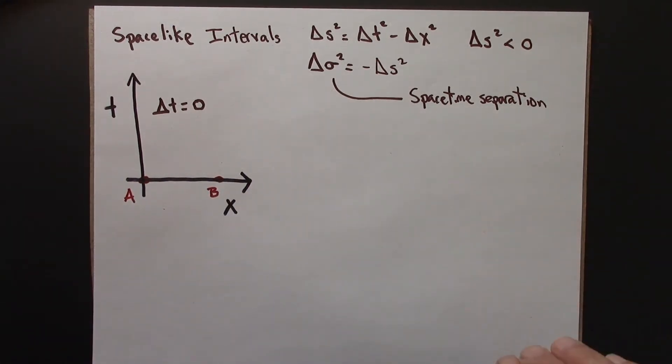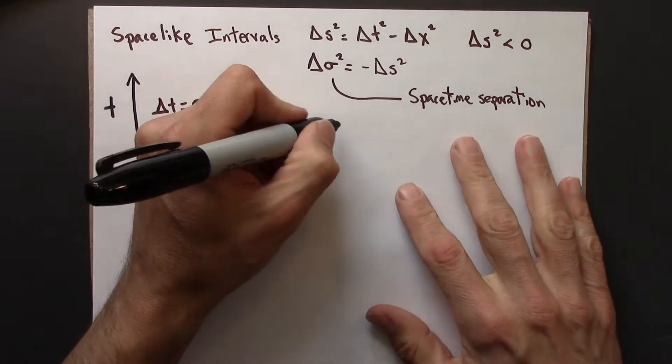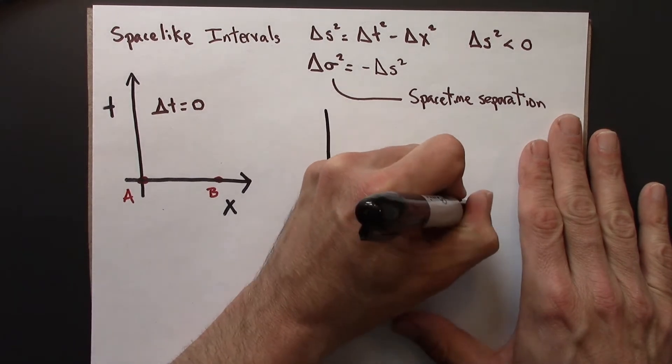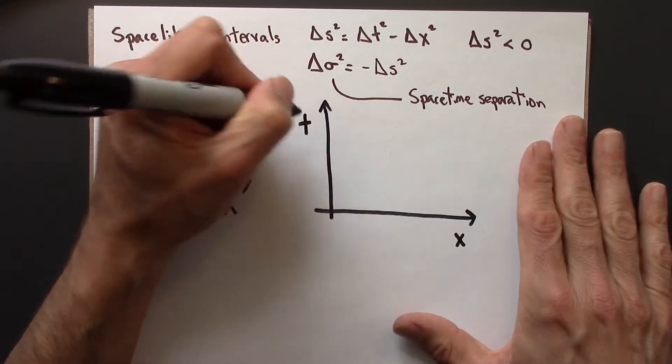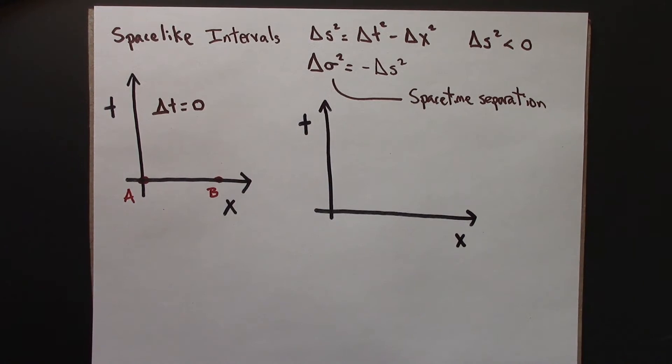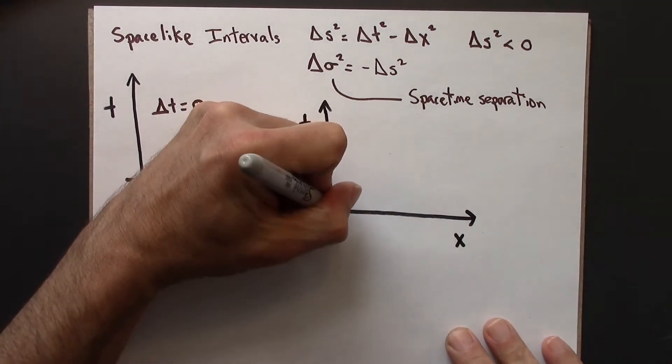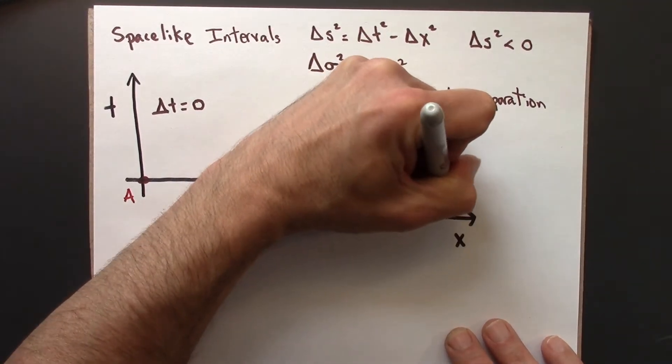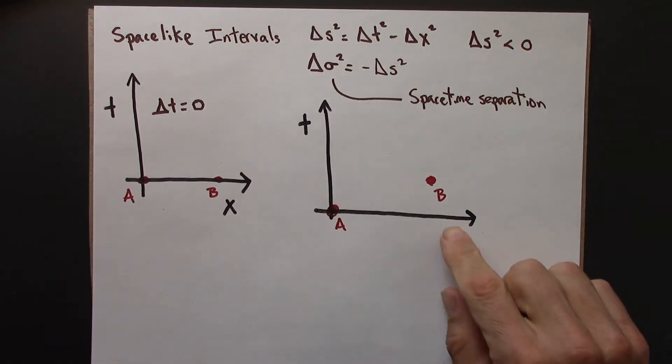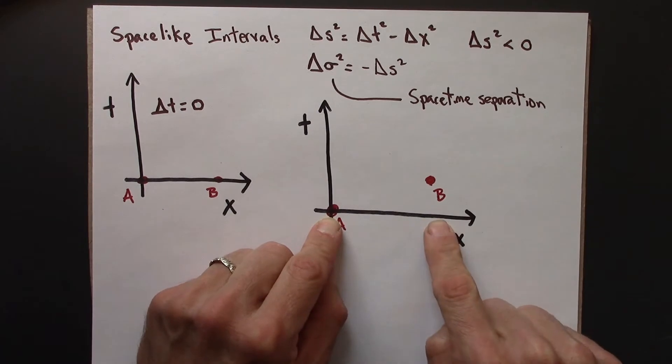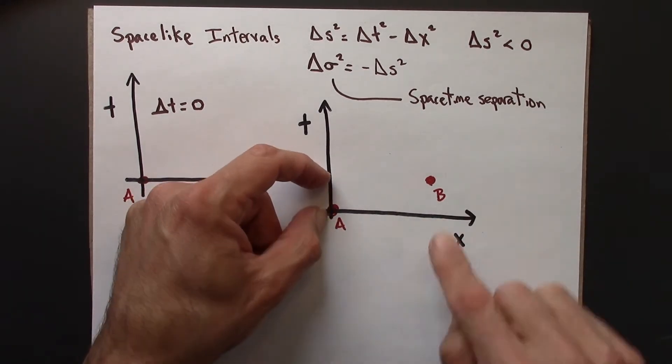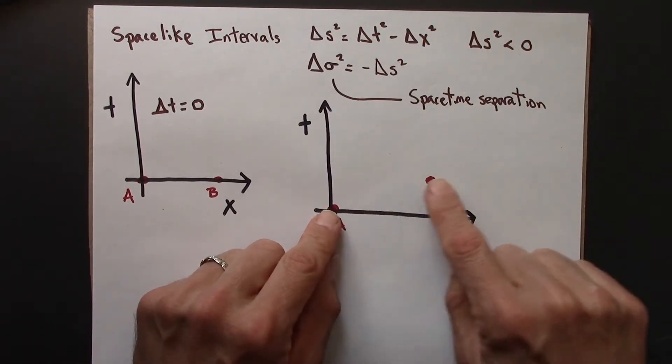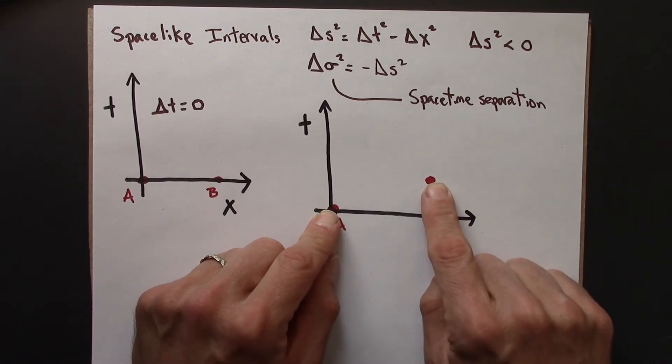But what about a more general situation? So let me draw that over here. Again, x and t. And now suppose that the two events in the unprimed frame maybe look like this. So this is still spacelike. Delta x is larger than delta t. So that means we're going to have a larger number here. That's going to make this thing negative. So this is still a spacelike separation.